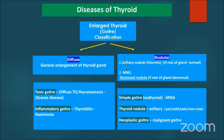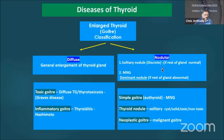The difference between the solitary nodule and a dominant nodule in a multinodular goiter is that in a solitary nodule, the rest of the gland is normal. That's what we'll be dealing with today. The second one is the multinodular goiter, which can be a simple goiter, thyroid nodule, or neoplastic.